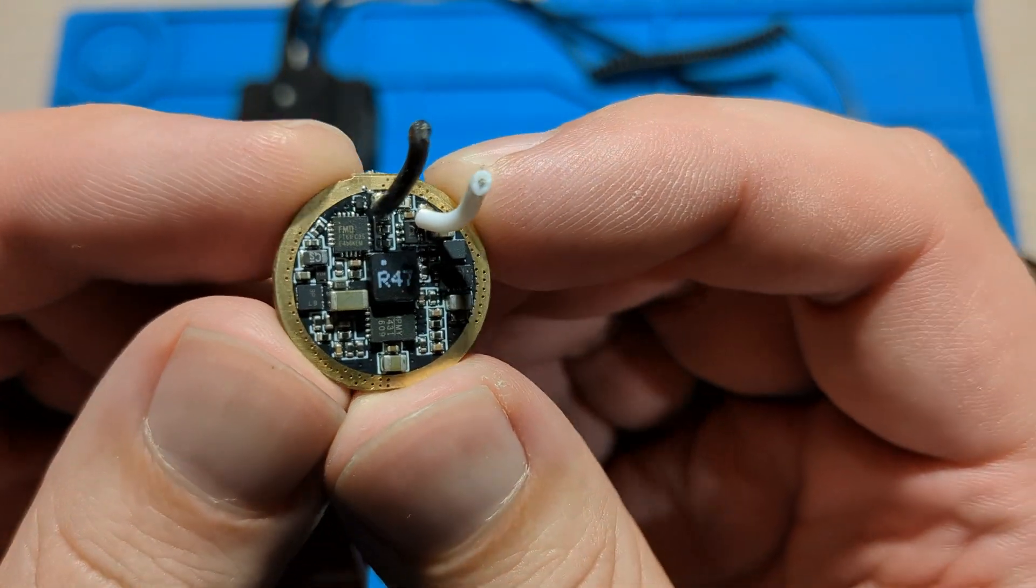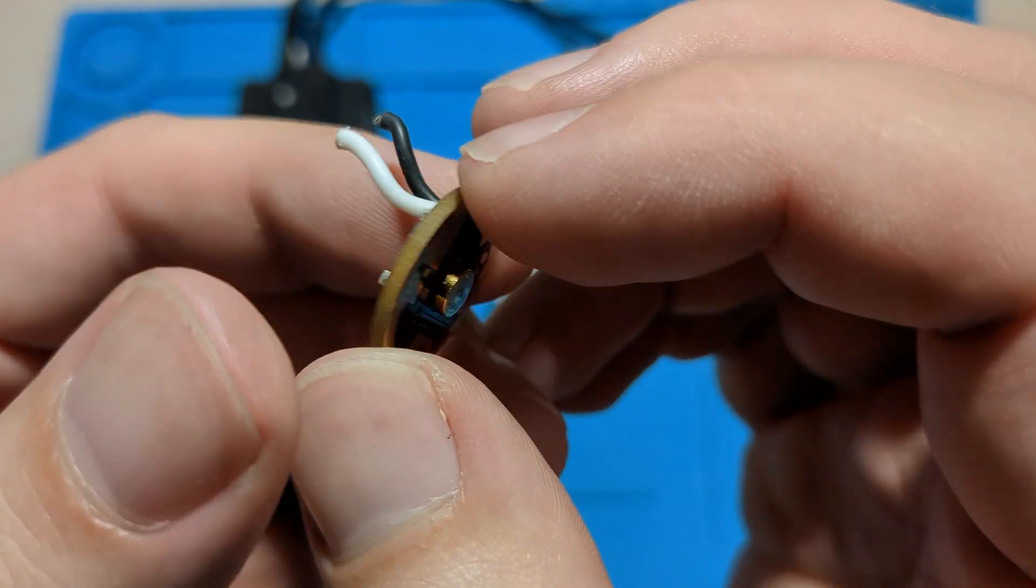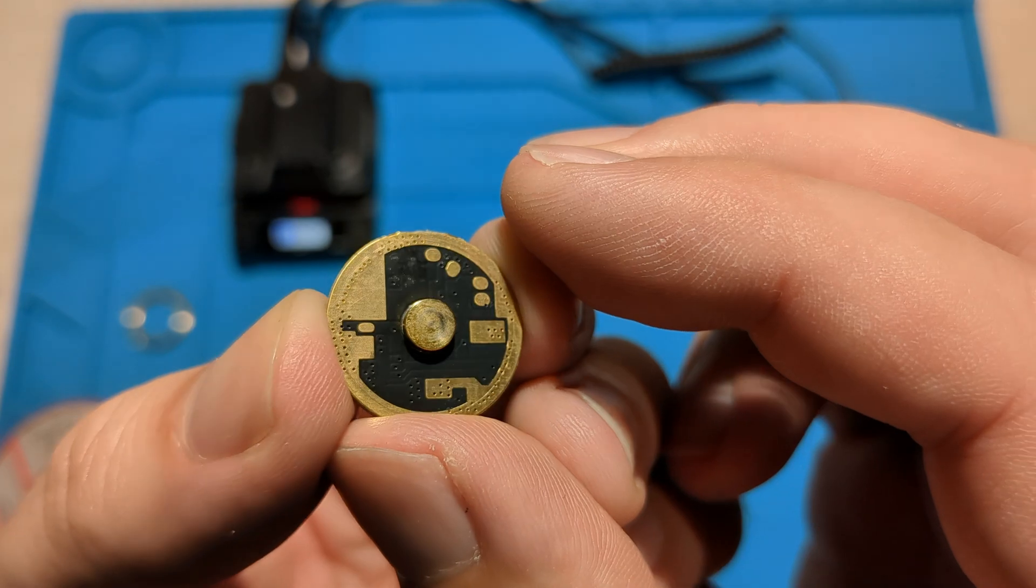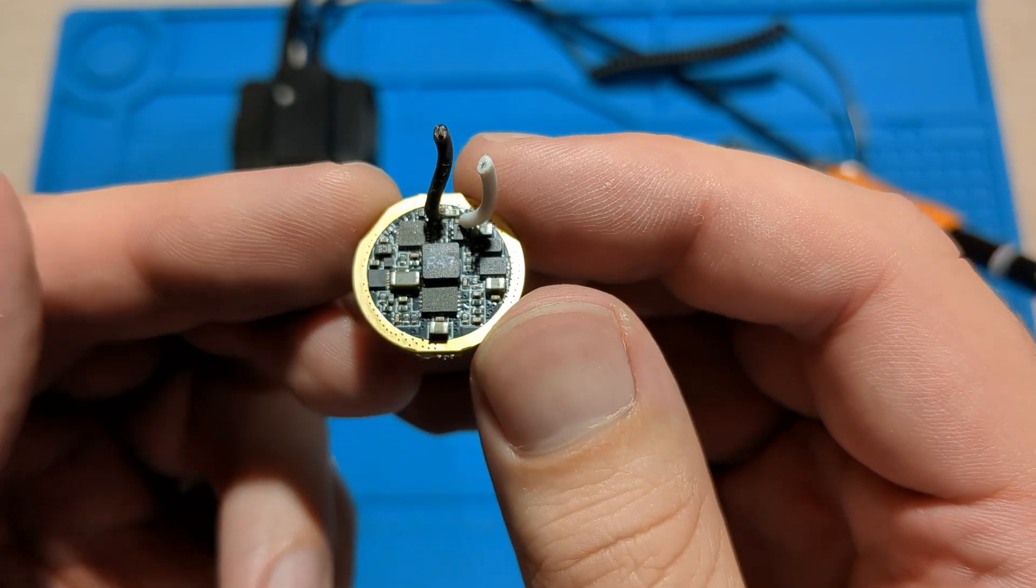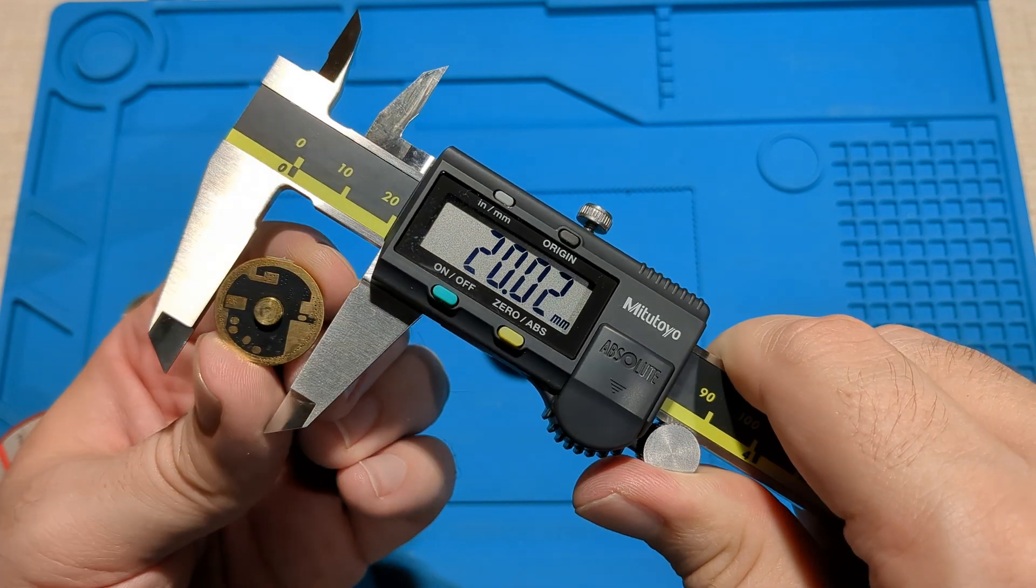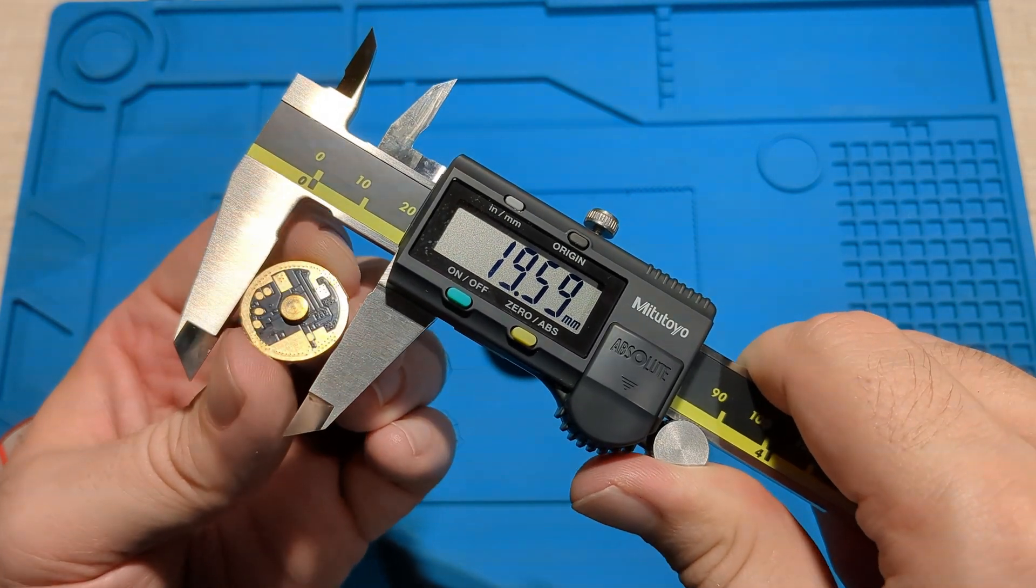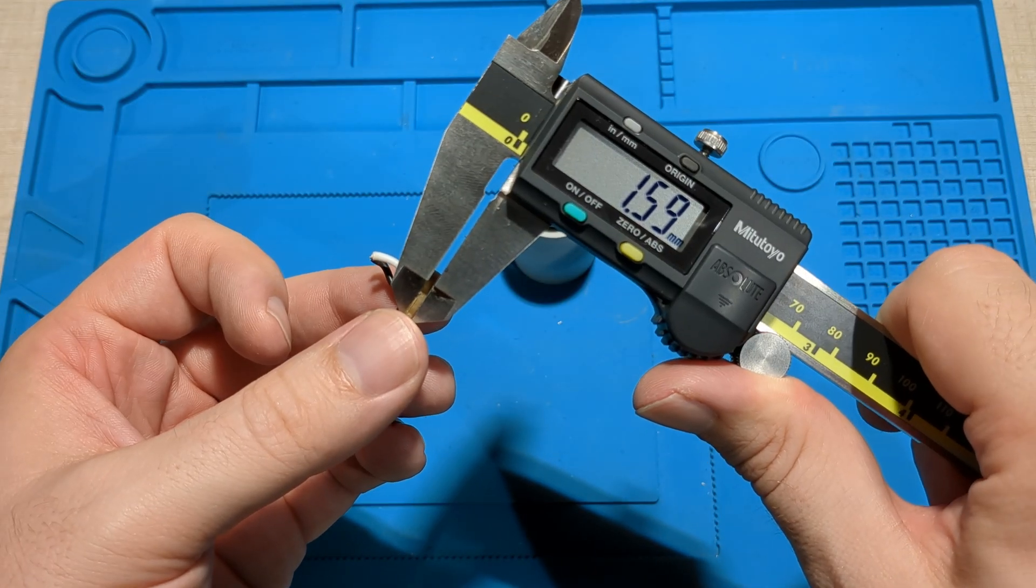So FMD, Friend Micro Devices. That brass pill on the back there, it's probably some test pads broken out from the MCU. Let's measure it. 19.64. So about 19.64 would be the outer diameter. So 1.59 for the PCB thickness.